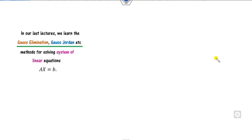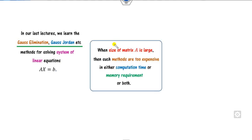In our last lecture, we discussed the Gauss elimination methods and Gauss-Jordan methods for solving the system of equations AX = B. These methods are called direct methods. However, when the size of matrix A is very large, finding the solution using these direct methods requires either very large computational time or a lot of memory.